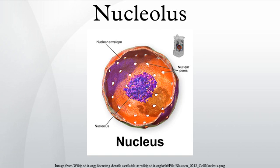The nucleolus is an organelle found in the nucleus of eukaryotic cells. It forms around specific chromosomal regions in the nucleus and is made up of proteins and RNA. Its primary function is to transcribe and modify ribosomal RNA and integrate ribosomal proteins to form immature ribosomes. It is also part of the eukaryotic cell stress response, acting as a stress sensor and able to regulate rRNA synthesis based on the cellular environment.